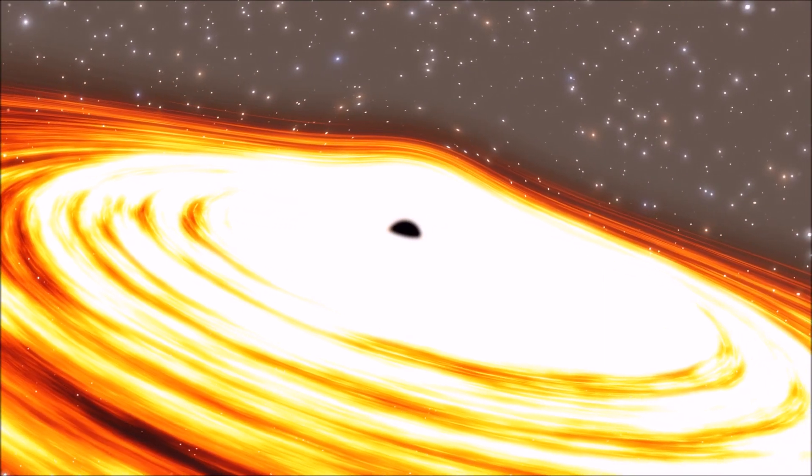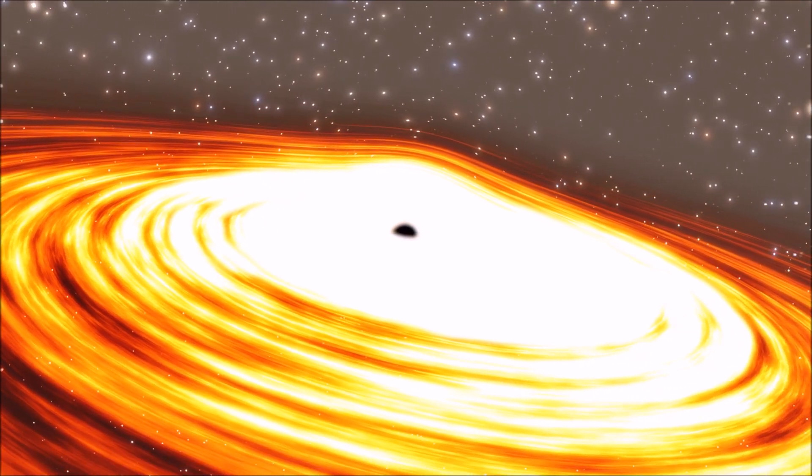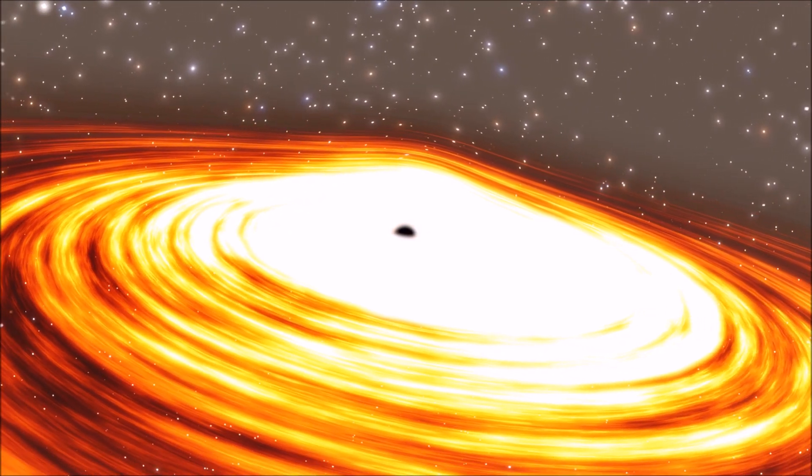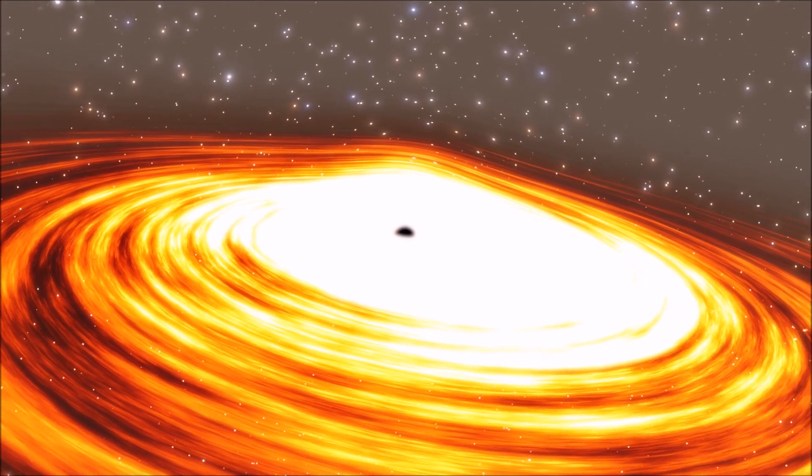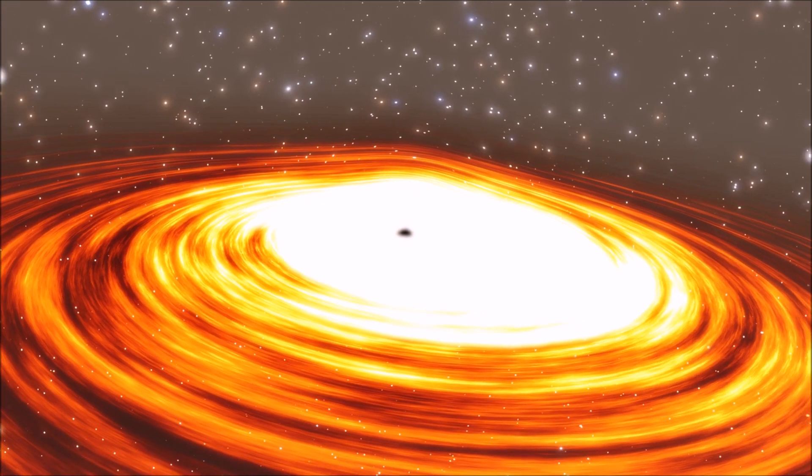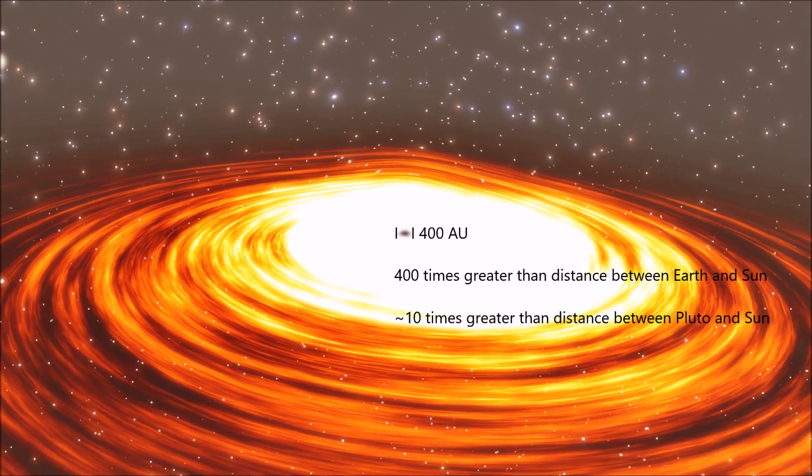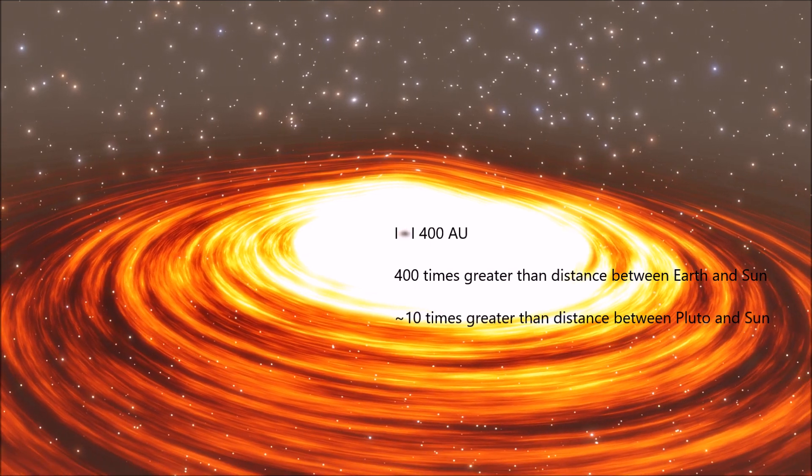Some have even dubbed this black hole as being ultramassive, instead of just supermassive, and rightly so, as it is an absolute behemoth. It is estimated to have a diameter of around 400 astronomical units. This is a colossal size for a black hole.